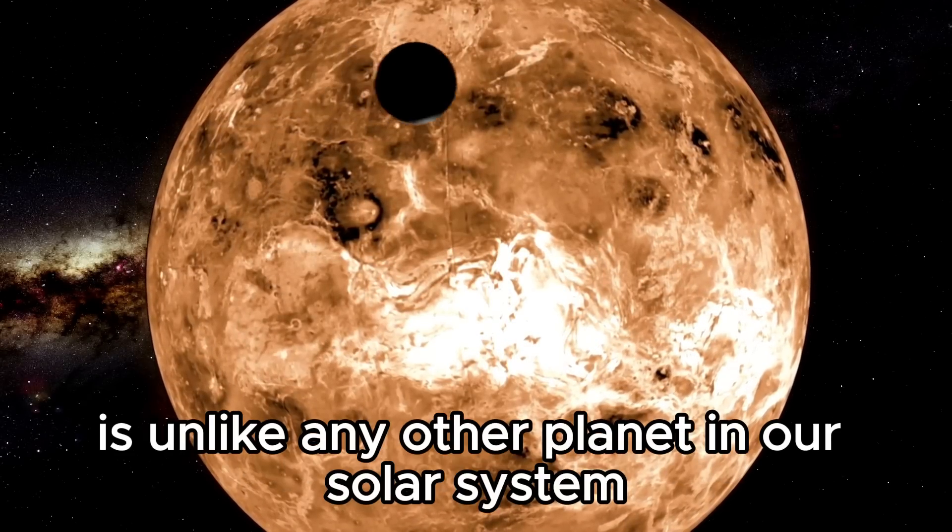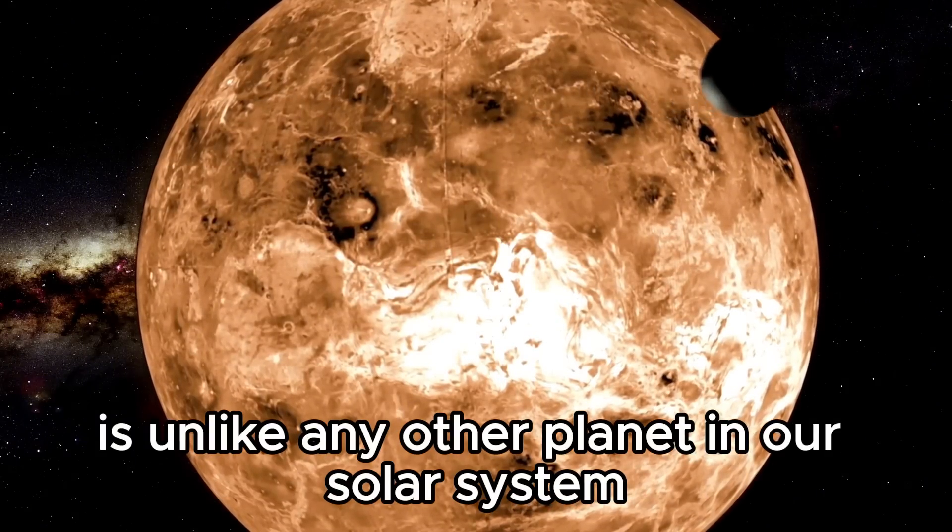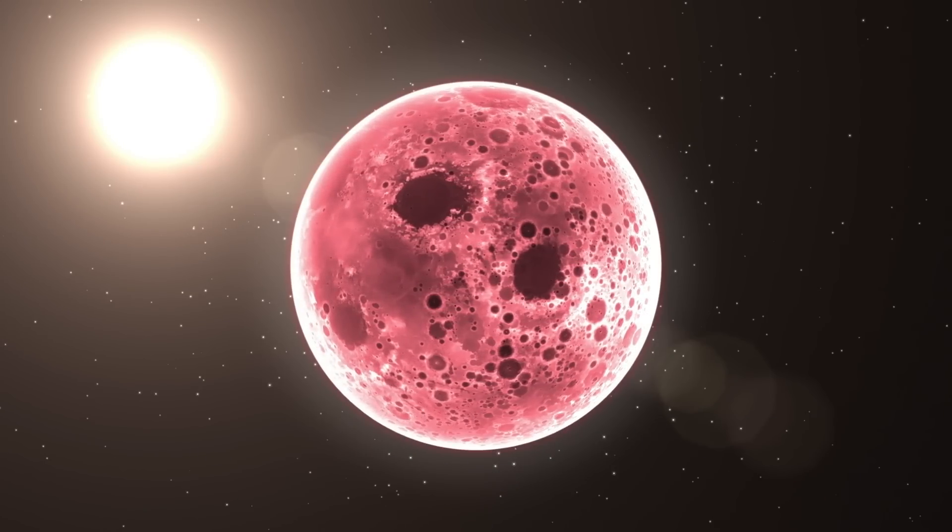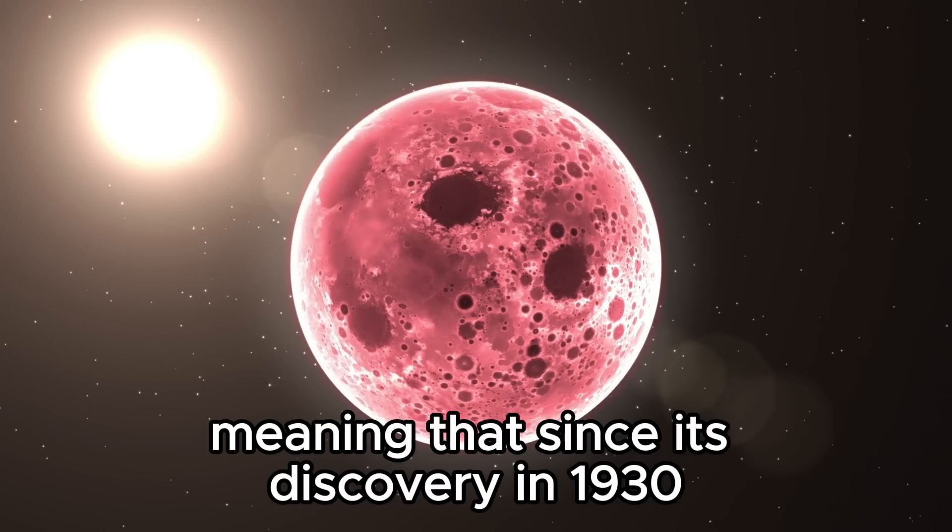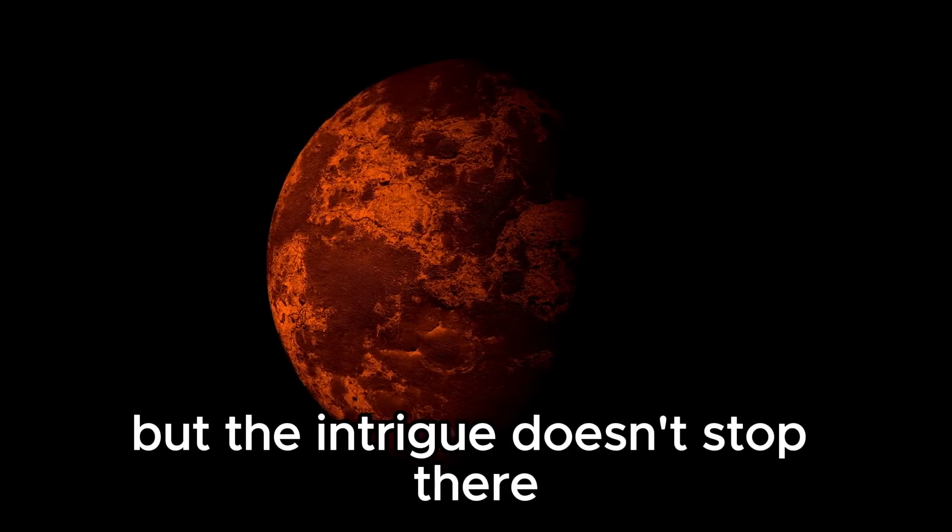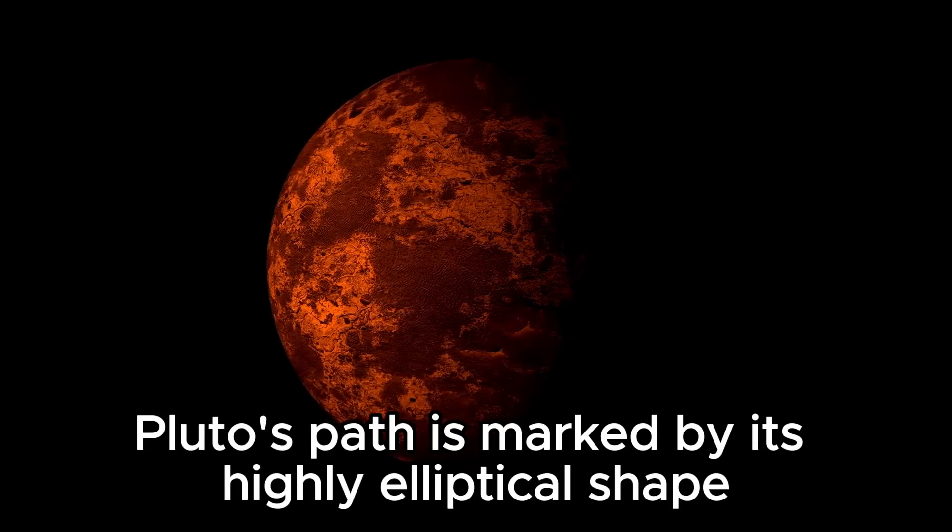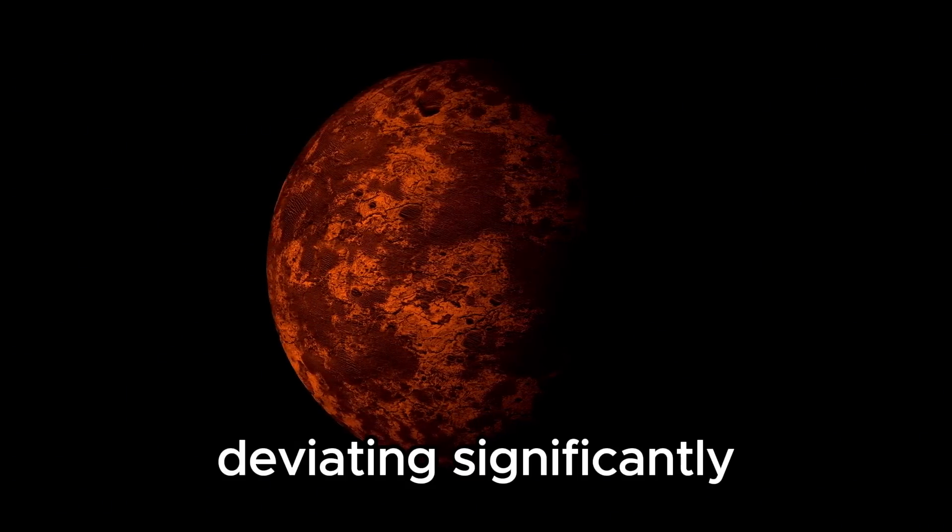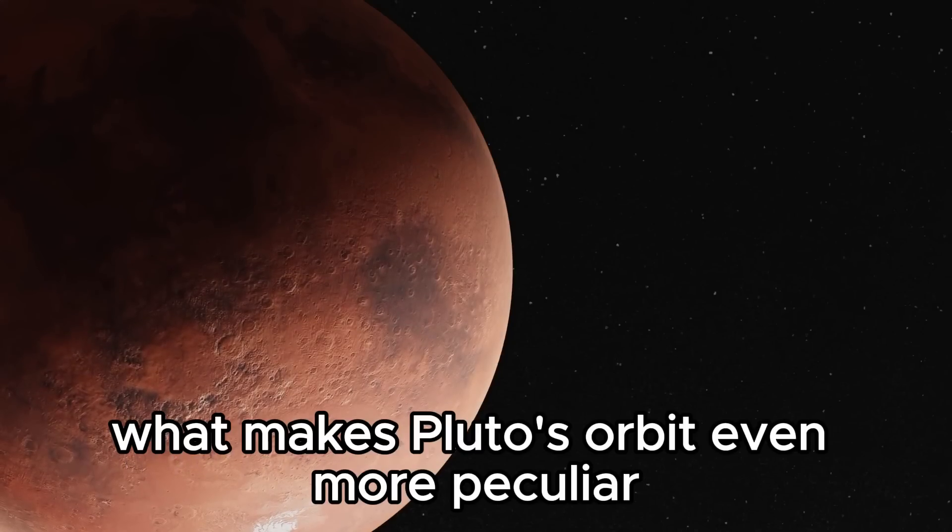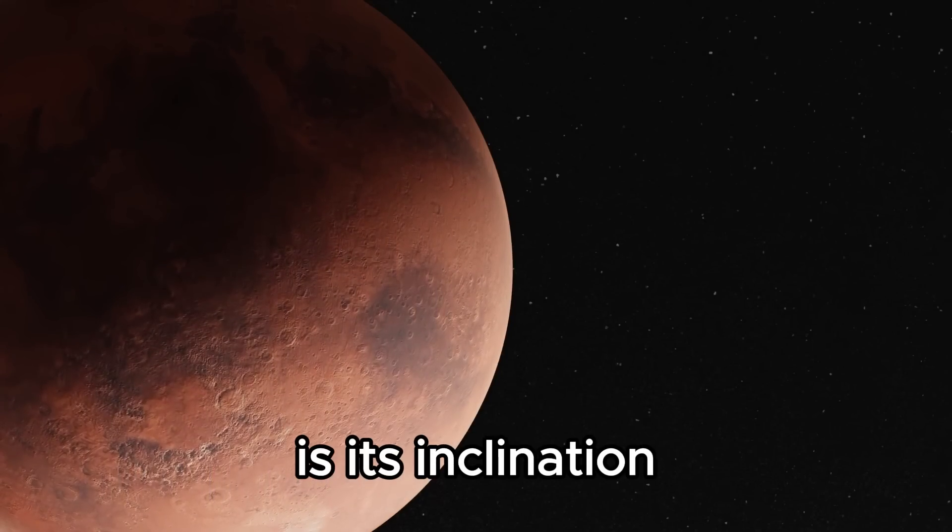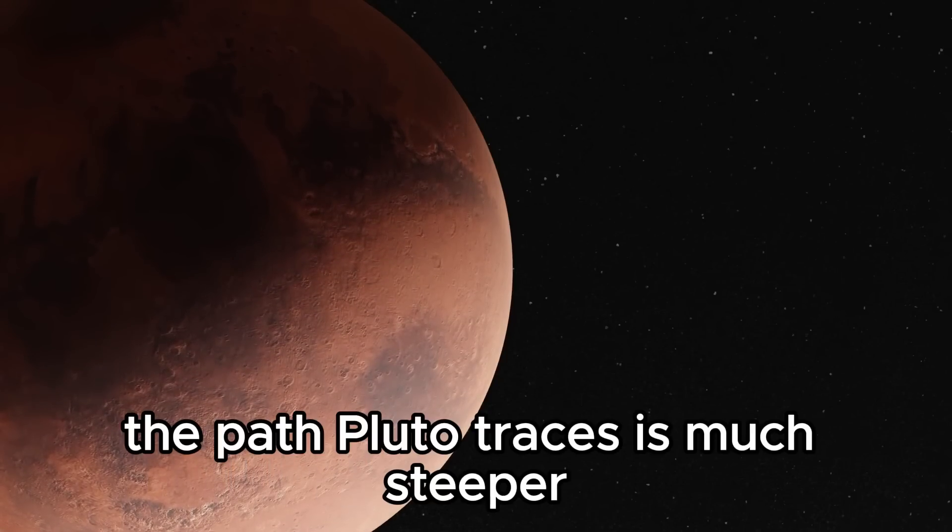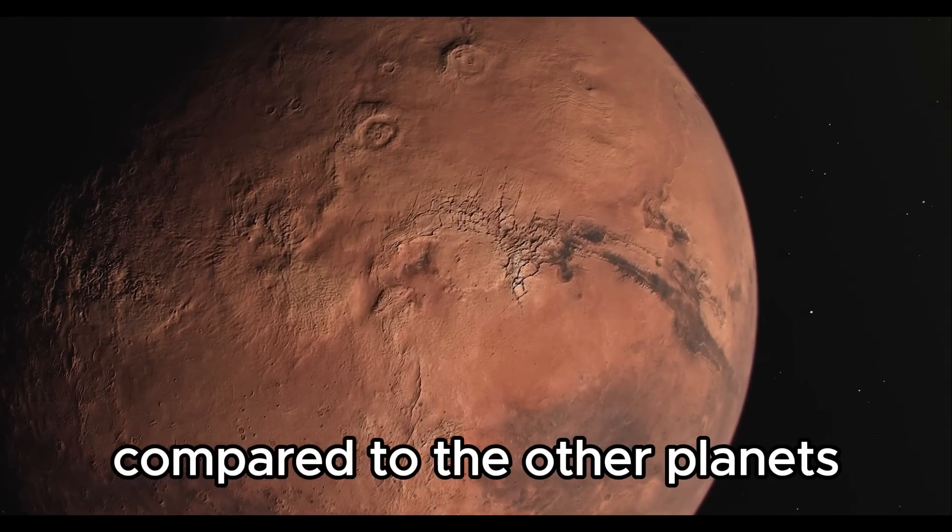Pluto's journey around the Sun is unlike any other planet in our solar system. It takes a staggering 248 years to complete a single orbit, meaning that since its discovery in 1930, it hasn't even finished one full revolution. Pluto's path is marked by its highly elliptical shape, deviating significantly from the near circular orbits of the major planets. What makes Pluto's orbit even more peculiar is its inclination, angled at 17 degrees to the ecliptic plane.